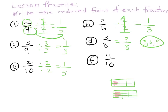Let's take a look at four-tenths. Four is an even number, ten is an even number, and they both have two in common. I can't go by four — four, eight, the next number is twelve — so it can't be four. It has to be two. Two goes into four twice, two goes into ten five times. Two-fifths!